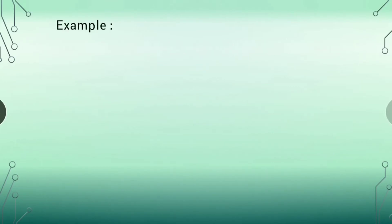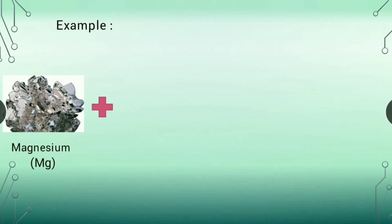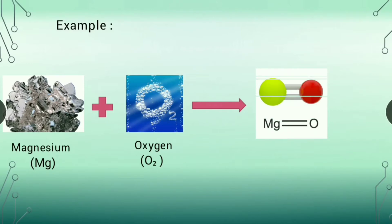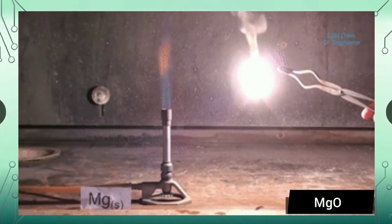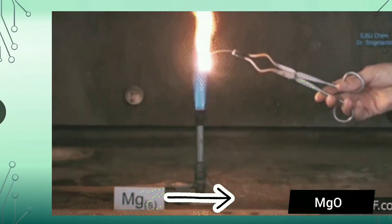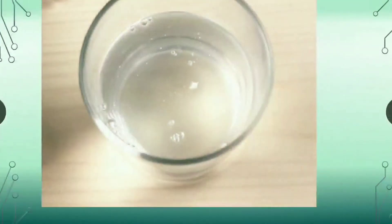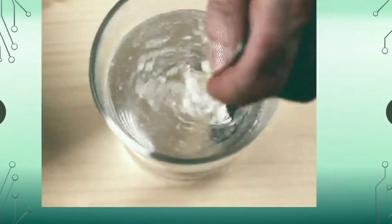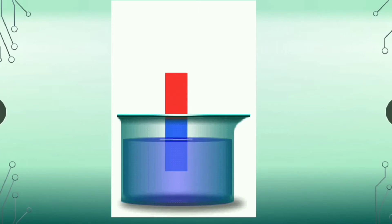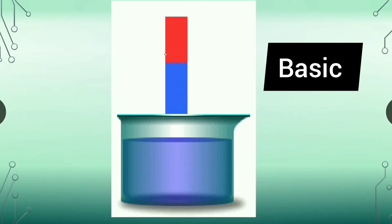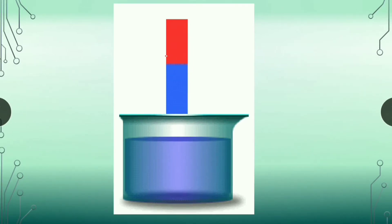Let's take an example. When magnesium reacts with oxygen, magnesium oxide is formed. Magnesium is a metal — when we burn magnesium ribbon in air, it gives out a dazzling white flame and produces magnesium oxide. If we mix this ash, magnesium oxide, in water, it dissolves partially. If we test this solution with red litmus paper, it turns blue, showing that metal oxides are basic in nature.